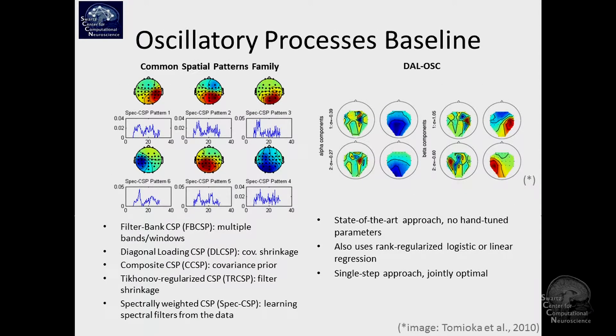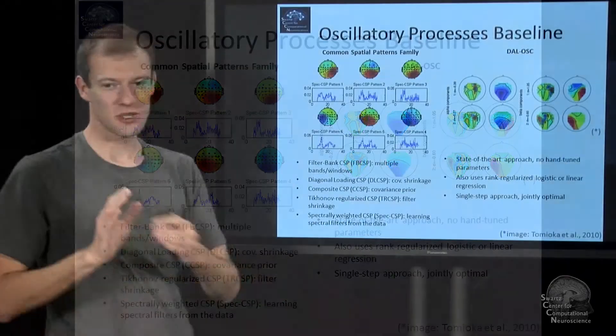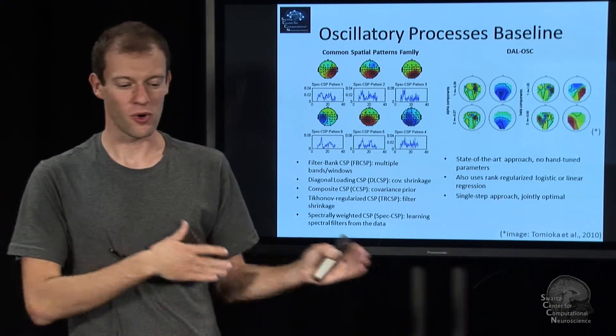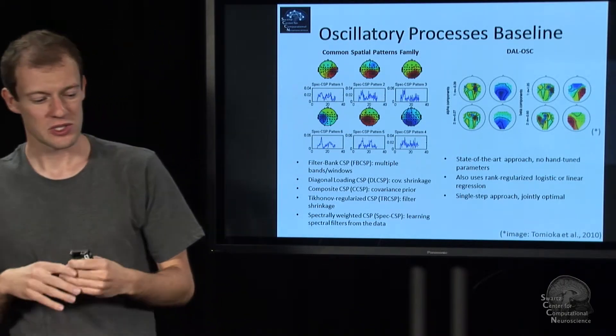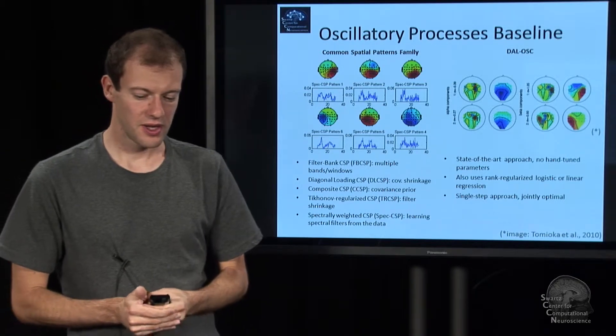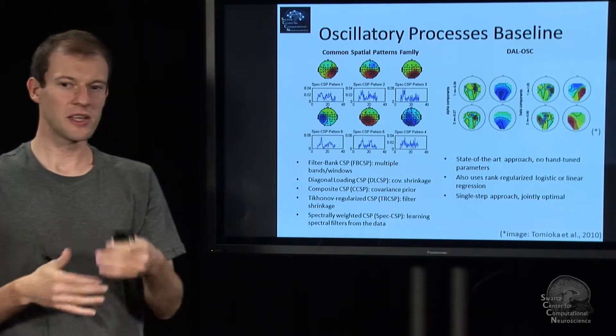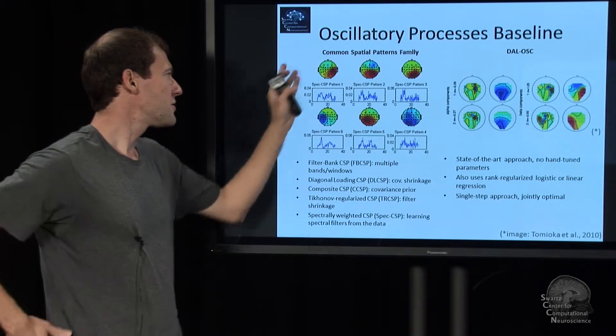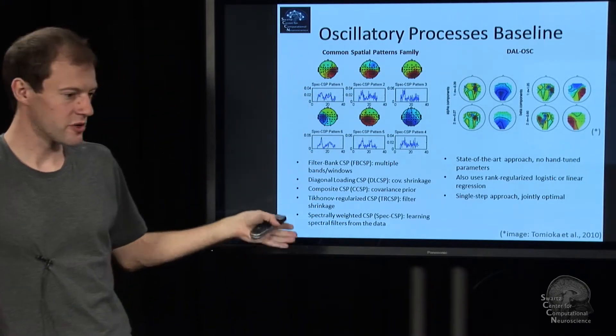For oscillatory processes, which is another category we will talk about in the next lecture, there's a baseline method called common spatial patterns, or CSP algorithm. It assumes that there's some stationary oscillation that is informative about some aspect of cognitive state in terms of how it's distributed in space or the amplitude. CSP has a lot of derivatives—there's more than 50 versions of this algorithm.